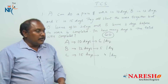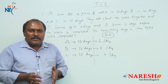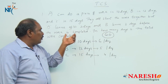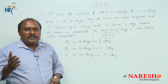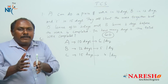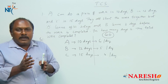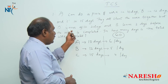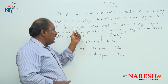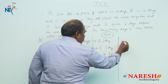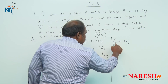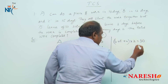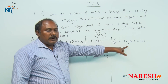They all started the work together but A leaves after 2 days. That is, the first 2 days all 3 are working together. All 3 per day will eat 6 plus 5 plus 4, that is 15 chocolates, and in 2 days they eat 30 chocolates. So in the first 2 days, 30 chocolates are completed.